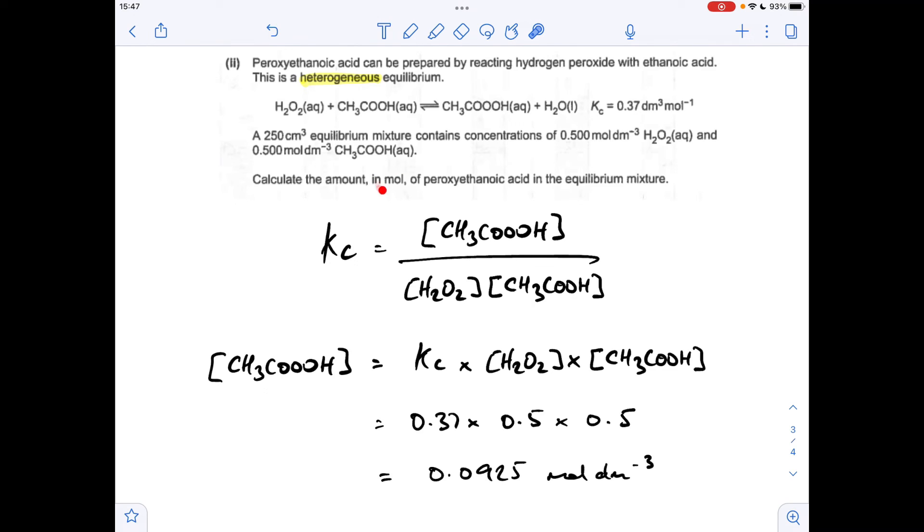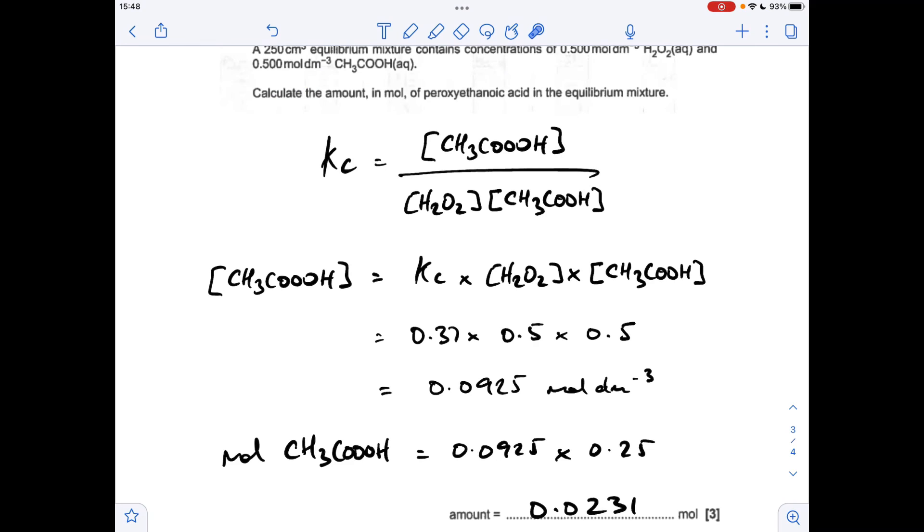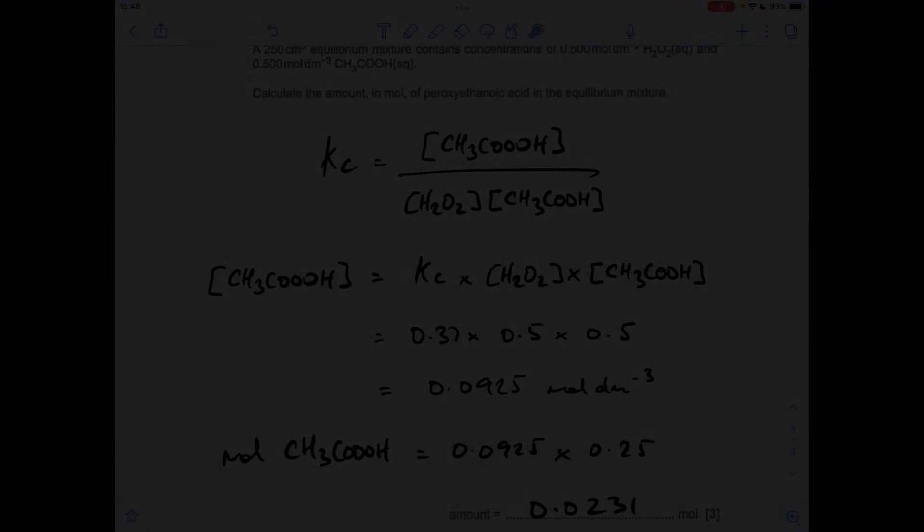We've got to work out the amount in moles we've got. To get the moles, it's the concentration multiplied by the volume that it's in. It's in 250 cm³, which has to be put in dm³. That gives a value of 0.0231 moles.